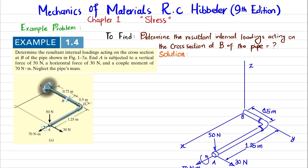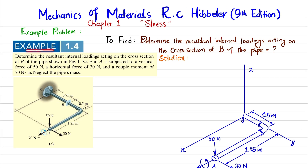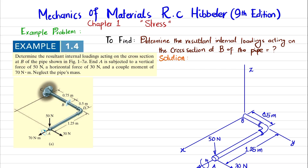Welcome back. In this video we are going to solve example 1.4 taken from chapter 1, Stress, from the book Mechanics of Material by R.C. Hibbeler 9th edition. The statement is: determine the resultant internal loading acting on the cross section at B of the pipe shown in the figure. Point A is subjected to a vertical force of 50 Newton, a horizontal force of 30 Newton, and a couple moment of 70 Newton·meter. Neglect the pipe mass. The pipe is fixed at point C.